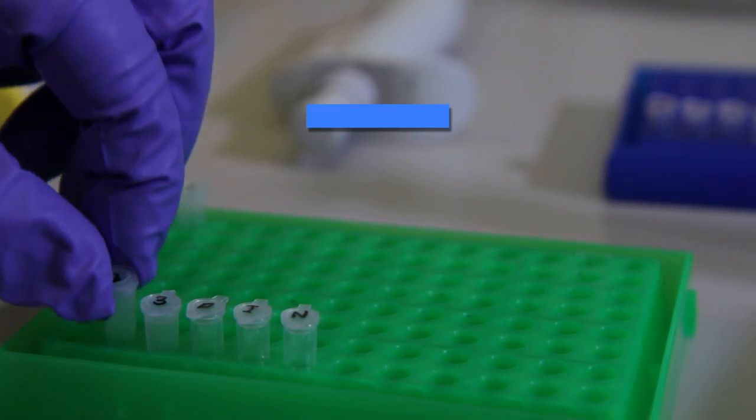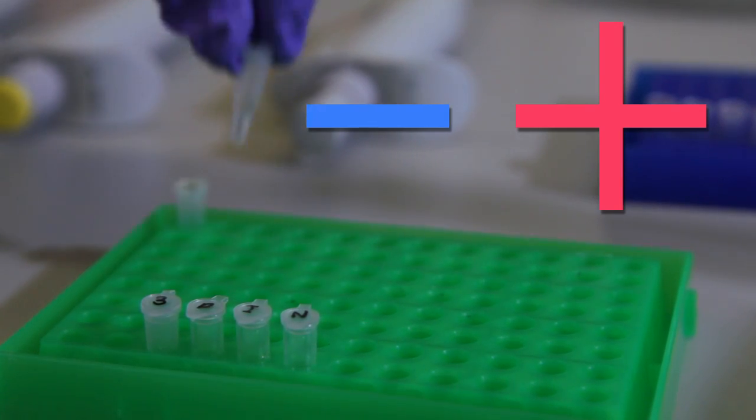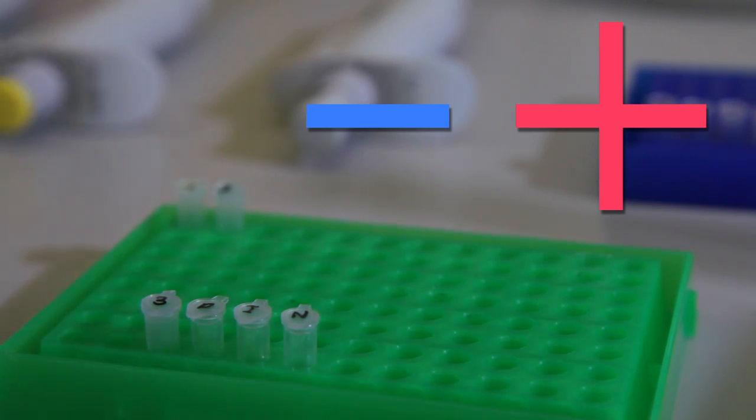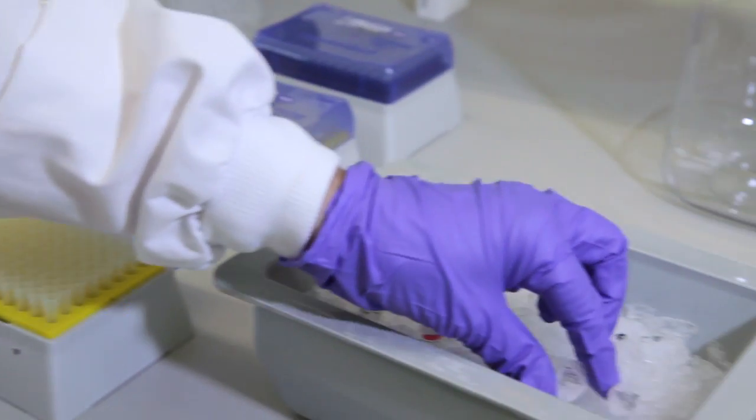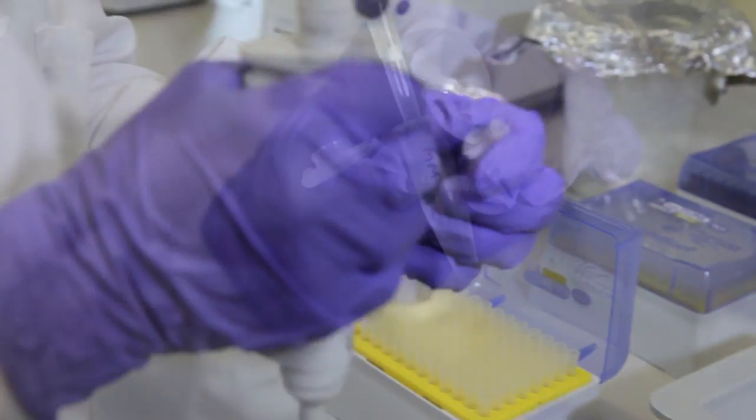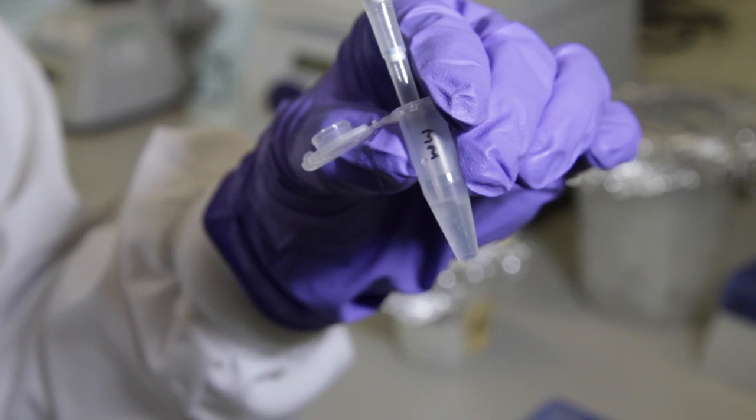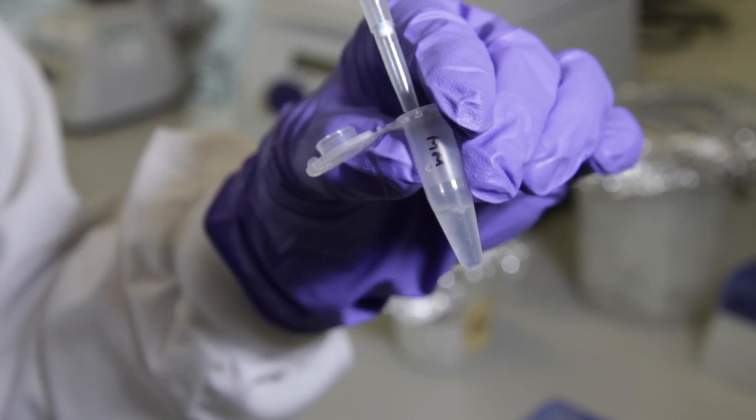Always use negative and positive control reactions to ensure the results are due to amplification of the right sample. To make sure we have enough reaction mix to go round, we will make up enough for 7 reactions, the 6 reactions already mentioned, plus 1 extra.